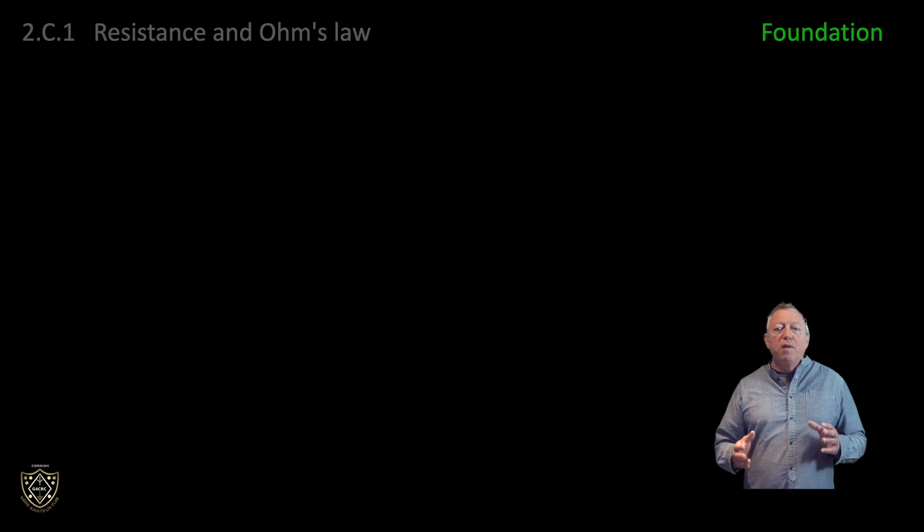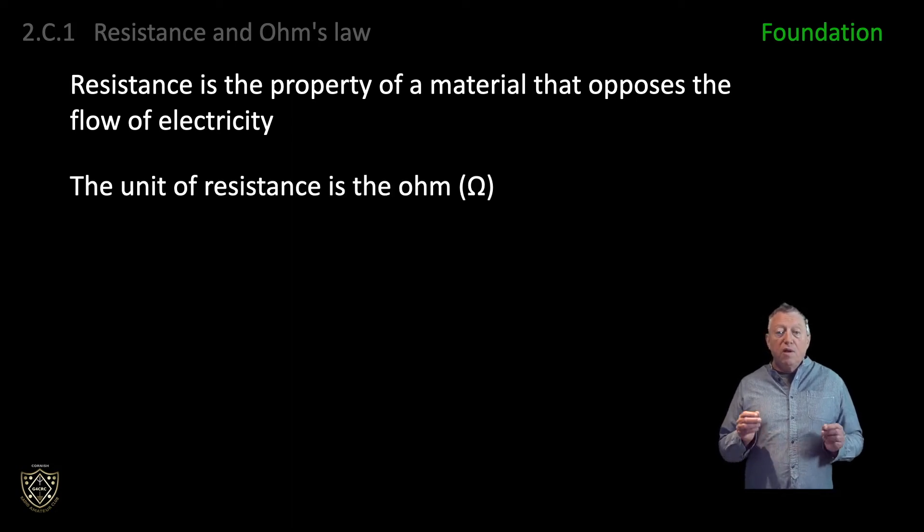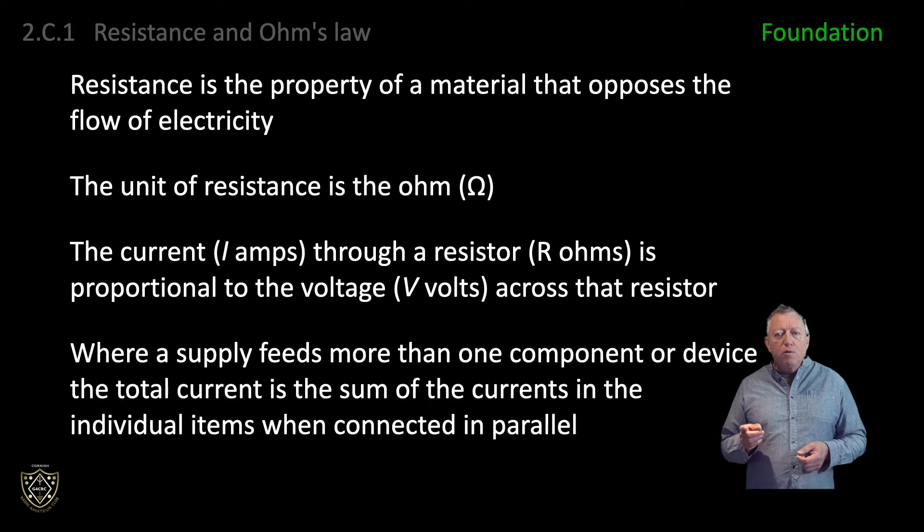Resistance is a property of a material that opposes the flow of electricity. The unit of resistance is the ohm. The current I amps through a resistor R ohms is proportional to the voltage V across that resistor. You should be able to use Ohm's law to calculate the value of any one of the three quantities, voltage V, current I, and resistance R, given the other two. Remember that where a supply feeds more than one component or device, the total current is the sum of the currents of the individual items when connected in parallel. This is Kirchhoff's current law.